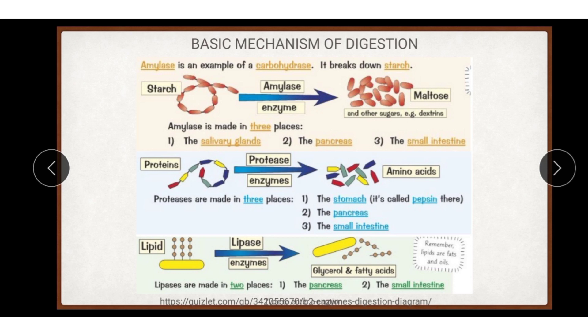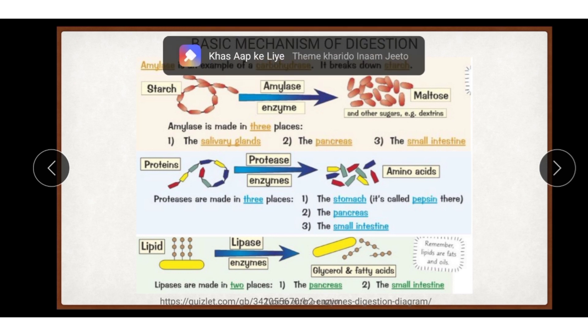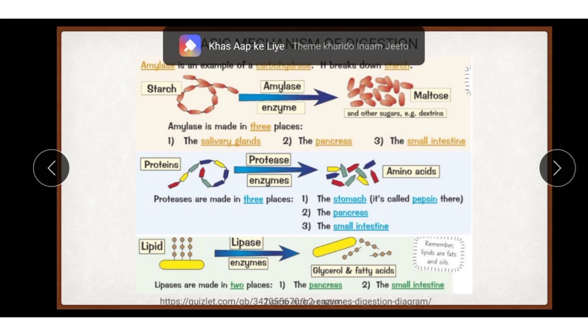In other words, digestion is the process in which polymers of carbohydrates, fats, proteins and nucleic acids are broken down into monomers by addition of water with the help of enzymes. These enzymes are called hydrolases. A large variety of digestive enzymes are found in omnivores. Hydrolases are of four types: carbohydrases, proteinases, lipases, and nucleases.